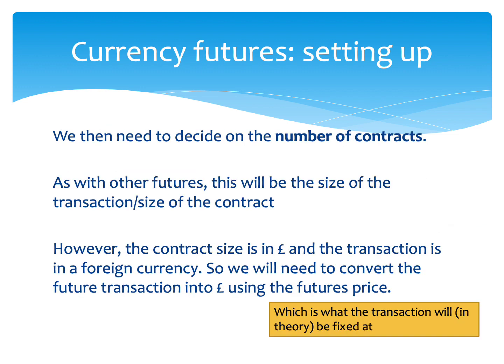The next thing we need to figure out is how many contracts we actually need, just like we did with interest rate futures. To do this, we take the size of the transaction we're trying to hedge and divide it by the size of the futures contract. The problem is that the contract is going to be in sterling, but the transaction you're trying to hedge will be in a foreign currency. So you can't work out the number of contracts by taking $10,000 and dividing it by £500 — that doesn't make any sense.